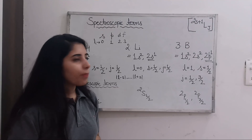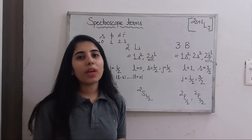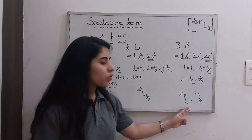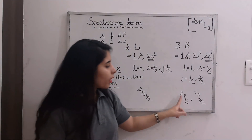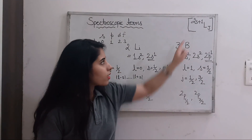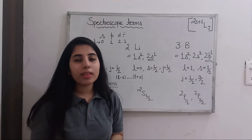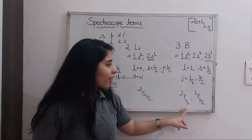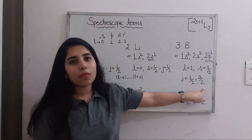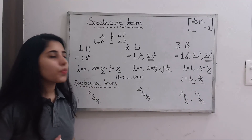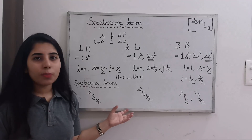Since we have two values of J, we get two spectroscopic terms for boron. Since L = 1, it is denoted as P. With S = 1/2, we get 2 × (1/2) + 1 = 2. The two spectroscopic terms are 2P_{1/2} and 2P_{3/2}, corresponding to J = 1/2 and J = 3/2 respectively. This is how you can easily write the spectroscopic terms.